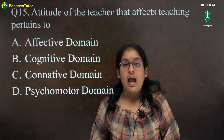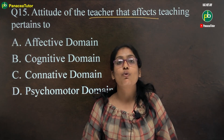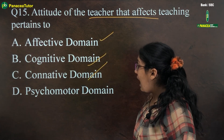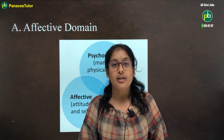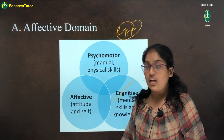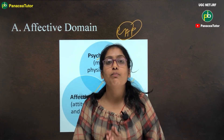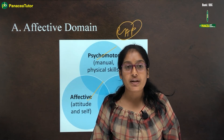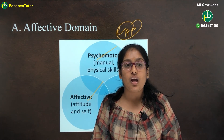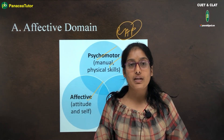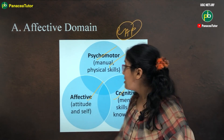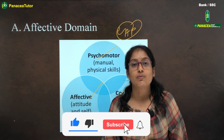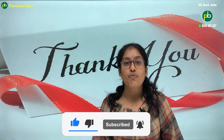The last question is: the attitude of the teacher that affects teaching pertains to which domain? In Bloom's Taxonomy, there are three domains: cognitive domain, affective domain, and psychomotor domain. The cognitive domain relates to mind, knowledge, and thinking skills. The affective domain covers three things: attitude, interest, and motivation. The psychomotor domain focuses on skills — whether technical or physical. Since attitude belongs to the affective domain, that is the correct answer. Thank you so much for watching. Have a nice time.